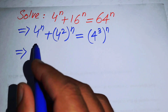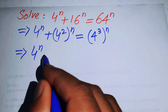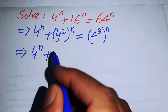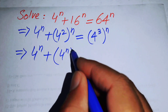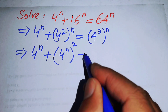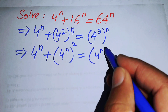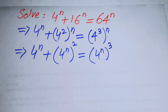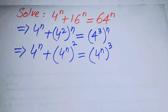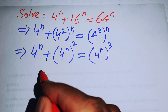Now we will apply the exponential law. According to this law we interchange the two exponents, so we write it as 4 to the power of n, plus 4 to the power of n squared, equals 4 to the power of n cubed.